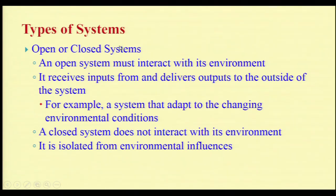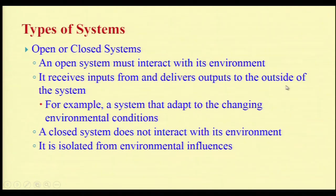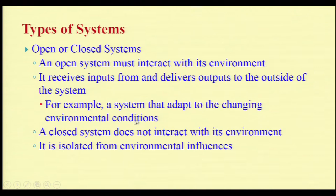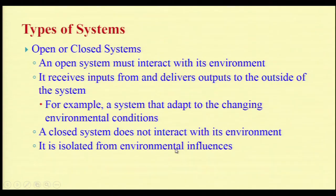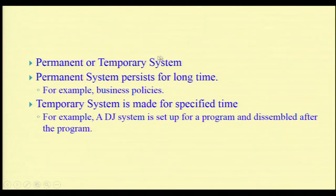A system that adapts to changing environmental conditions is said to be an open-ended system. A closed system does not interact with the outside environment — it is isolated from environmental influences. In reality, it is very rare to find a closed system. Next is the permanent or temporary system. A permanent system persists for a longer duration, such as business policies.